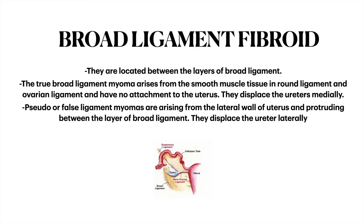Broad ligament fibroids are located between the layers of the broad ligament. The true broad ligament fibroid arises from smooth muscle tissue in the broad ligament and ovarian ligament and has no attachment to the uterus. Pseudo or false broad ligament myomas arise from the lateral wall of the uterus. This fibroid has a very close relation to the ureter — the true broad ligament fibroid displaces the ureter medially, whereas the false broad ligament fibroid displaces the ureter laterally.